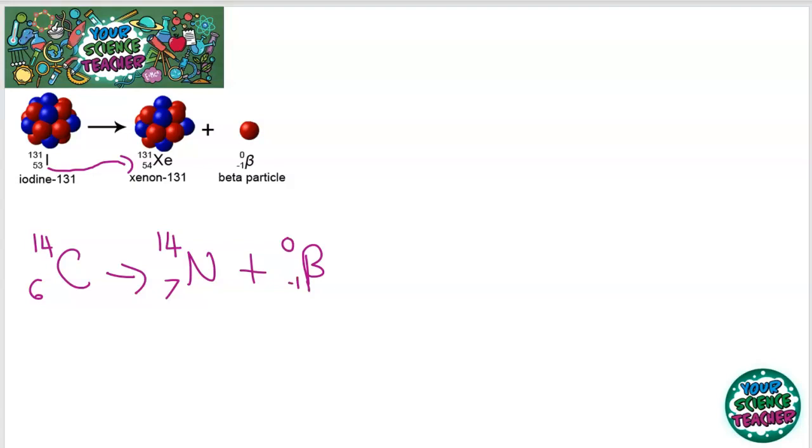And what a beta particle basically is, is just a high energy electron. And you can see with this particle that's been emitted, it has a minus one proton number because it just balances out the equation.